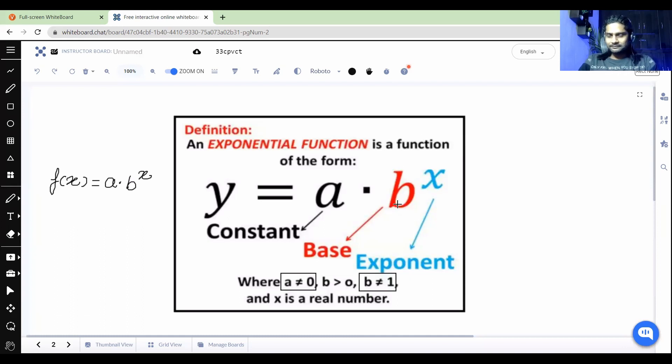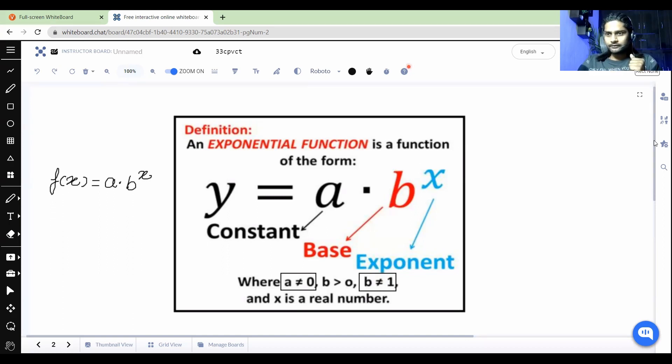All right, students. So let's consider, that's true that a cannot be zero, and even b cannot be equal to one. But there are two possibilities. B can either be less than one or greater than one. Here they just said less than zero. The given b should be greater than zero. If it's negative, then basically there are some different transformations that occur that we don't want to discuss right now. Just consider we'll be having two cases where b is less than one, or it's greater than one.